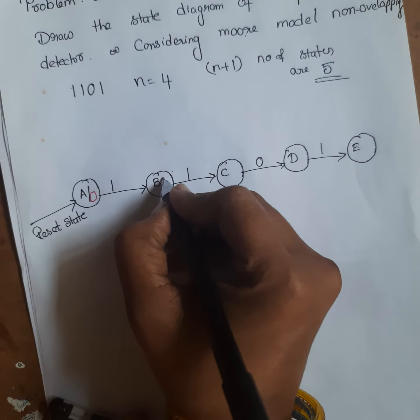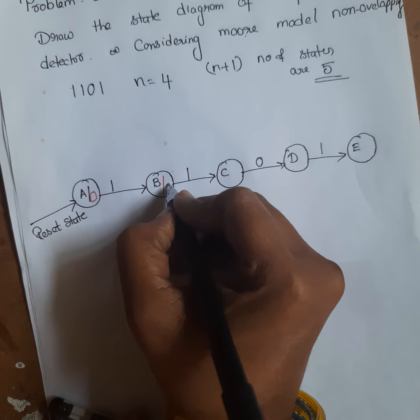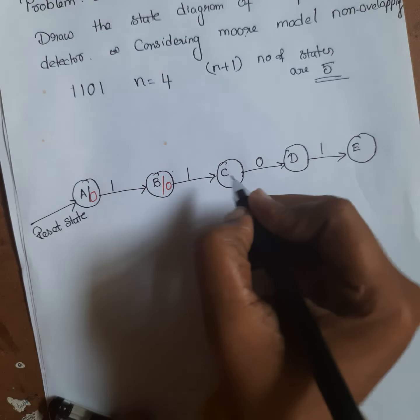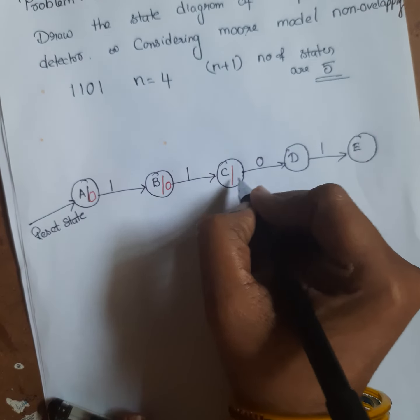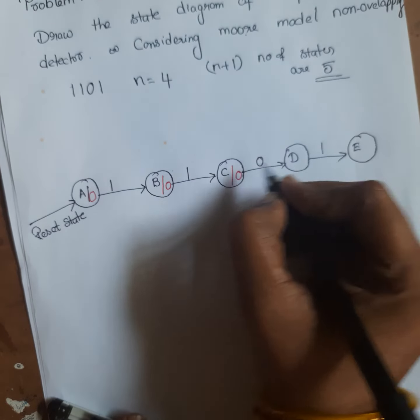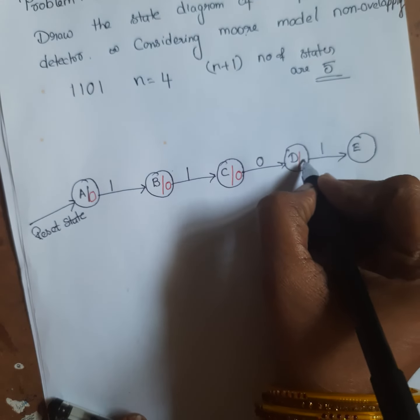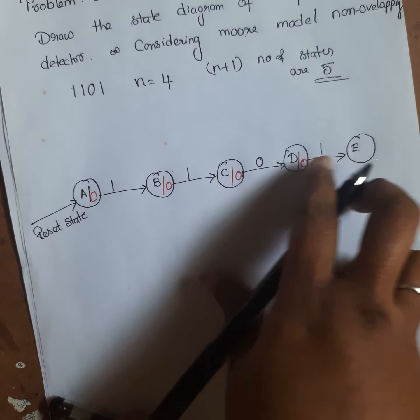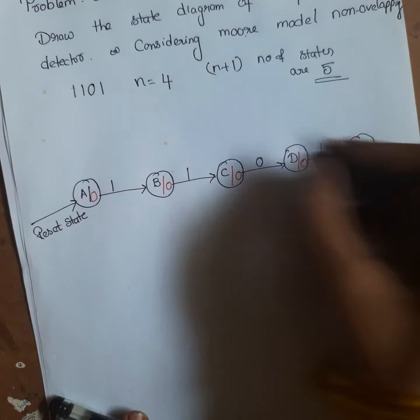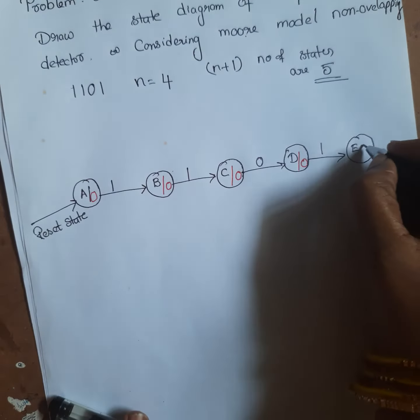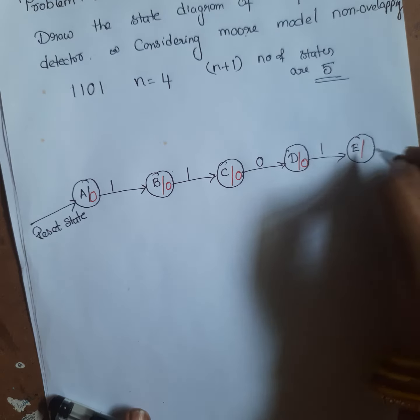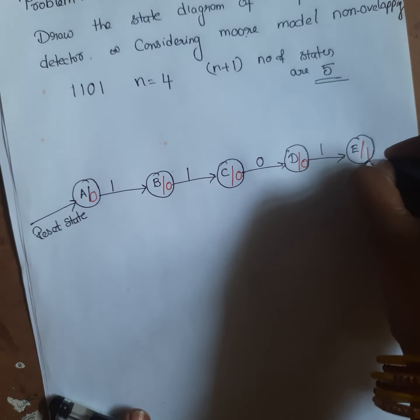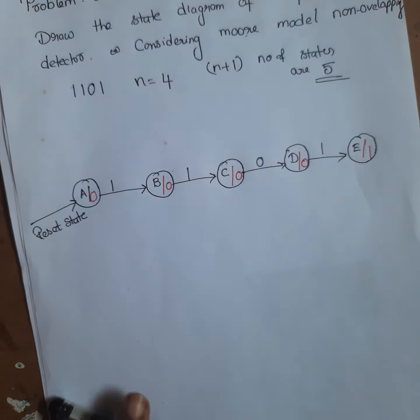Here the sequence is not yet detected, so the output is 0 for states A, B, C, and D. For state E — where the full sequence 1, 1, 0, 1 has been detected — the required pattern is detected, so the output should be 1.